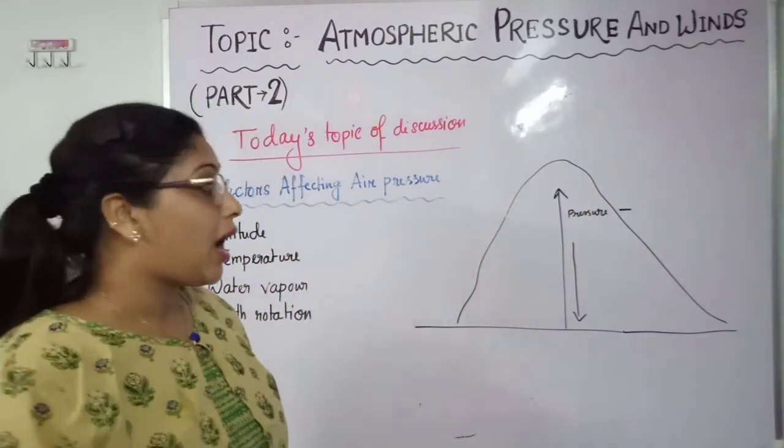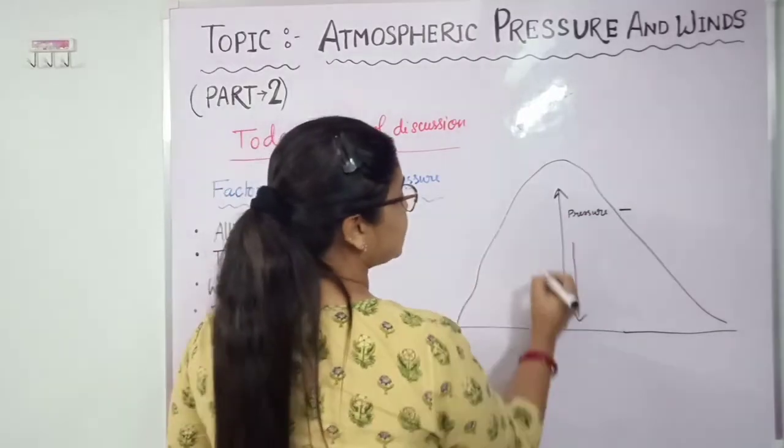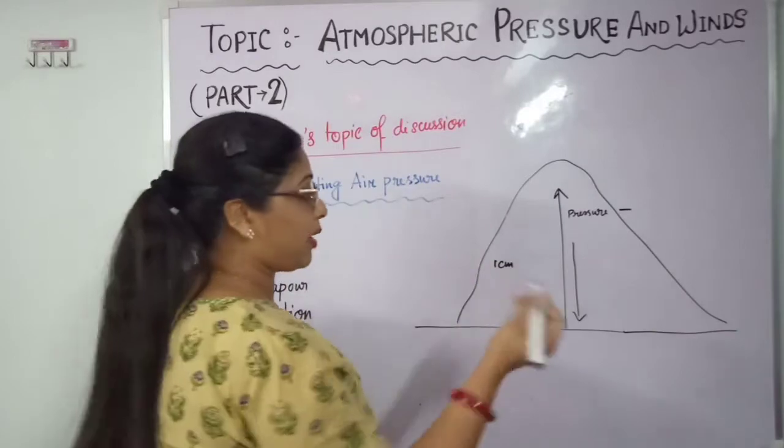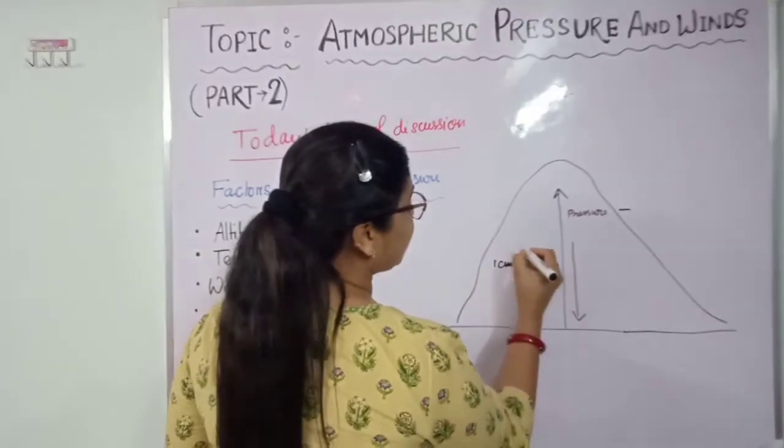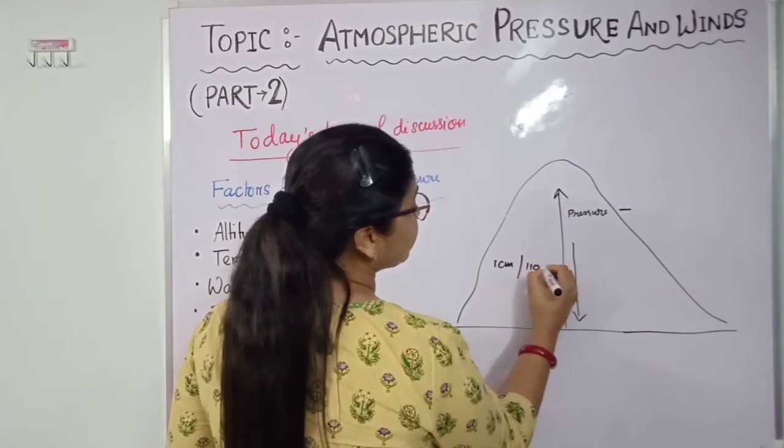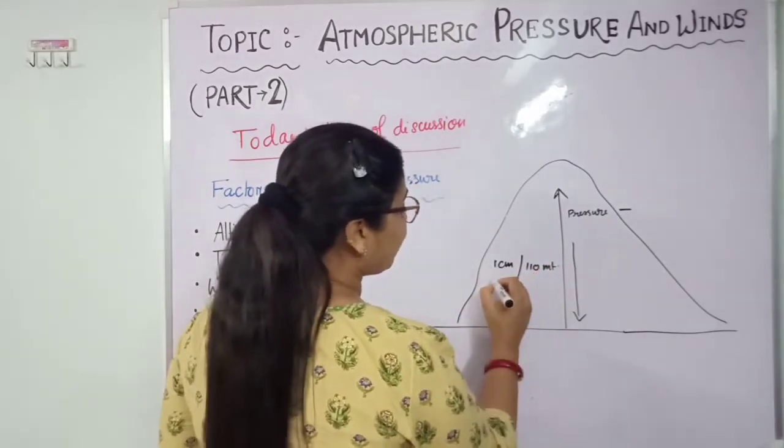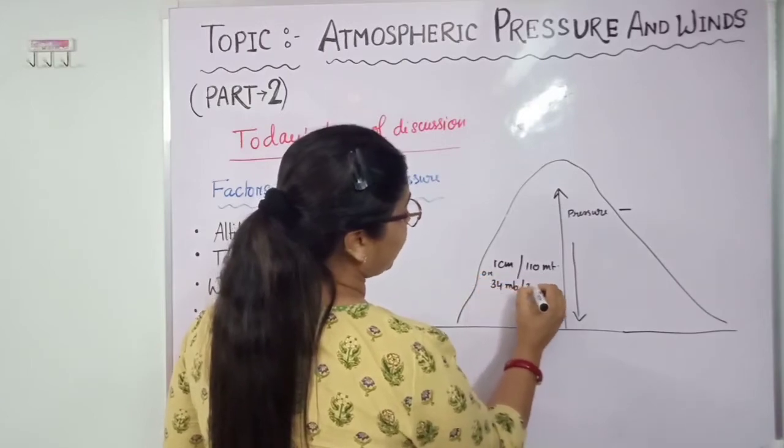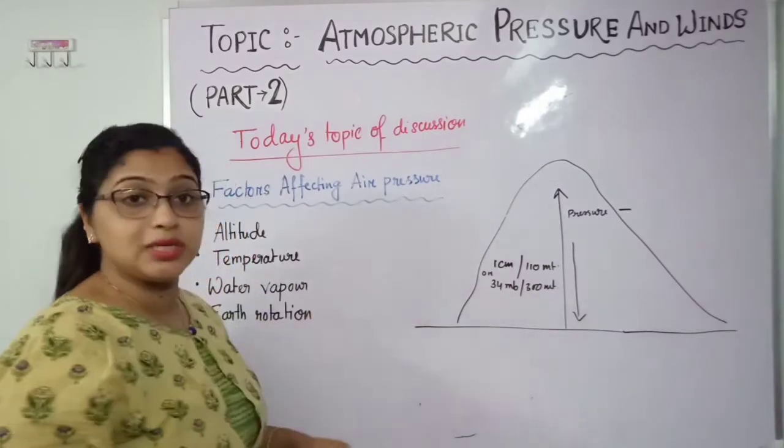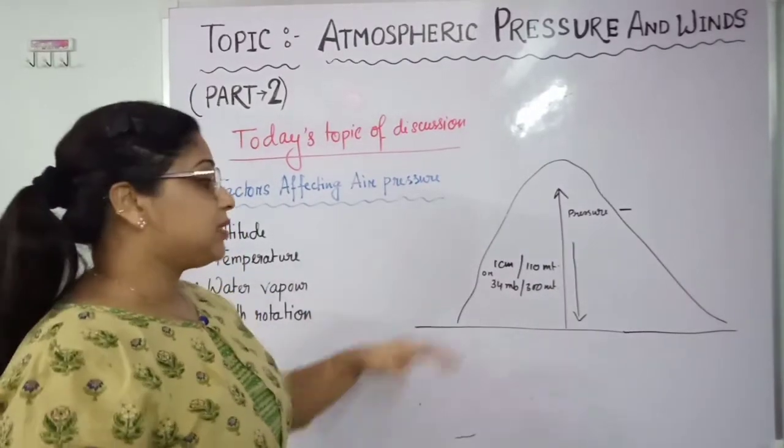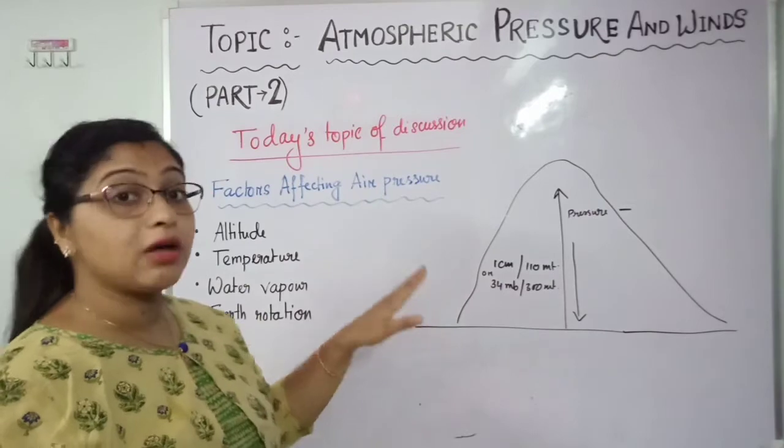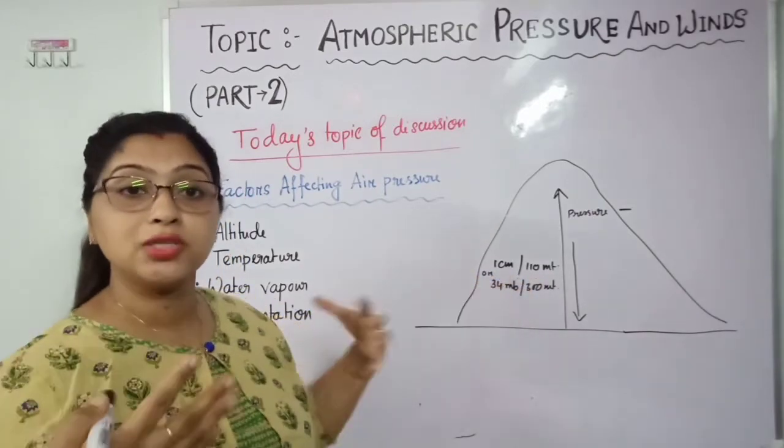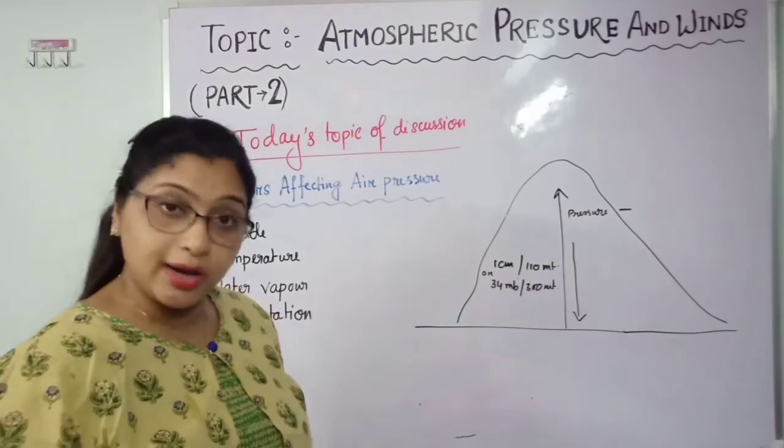And here students, how much does the pressure decrease? It decreases one centimeter in the mercury barometer per 110 meters of height, or we can write 34 millibar per 300 meters of height. Already I have discussed this in the first part, but this is very important. Whenever you are explaining altitude, you should mention how much the pressure is decreasing with height.